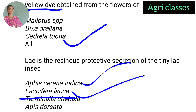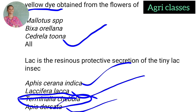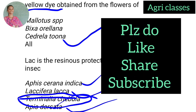Note: Apis serrana indica is a honey bee species — it is not the lac insect. Scientific names are important to know. We have medicinal plant crops left over, which we will cover in the next video. If you like this video, share it and subscribe. Share it with your friends. Thanks for watching Agri Classes — see you in the next video. Take care.